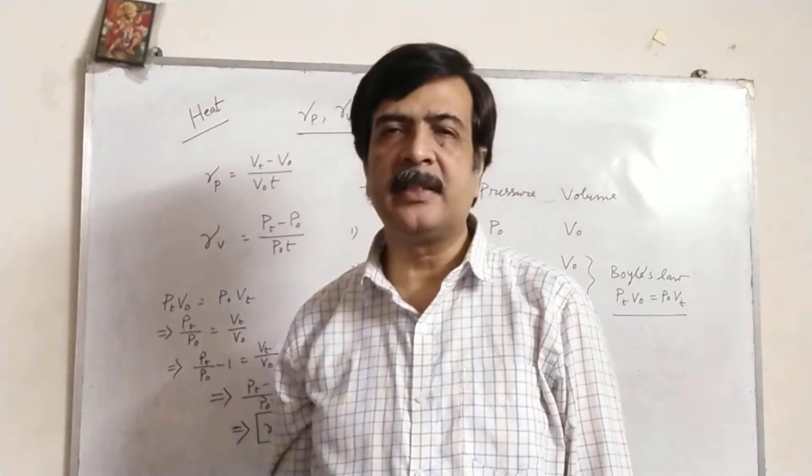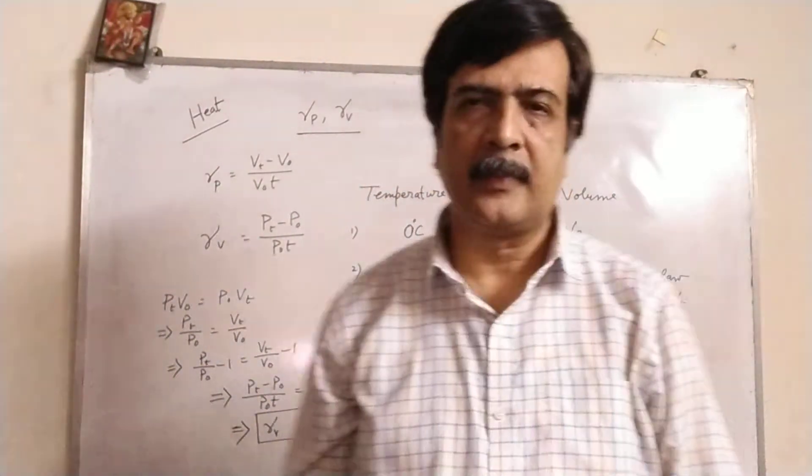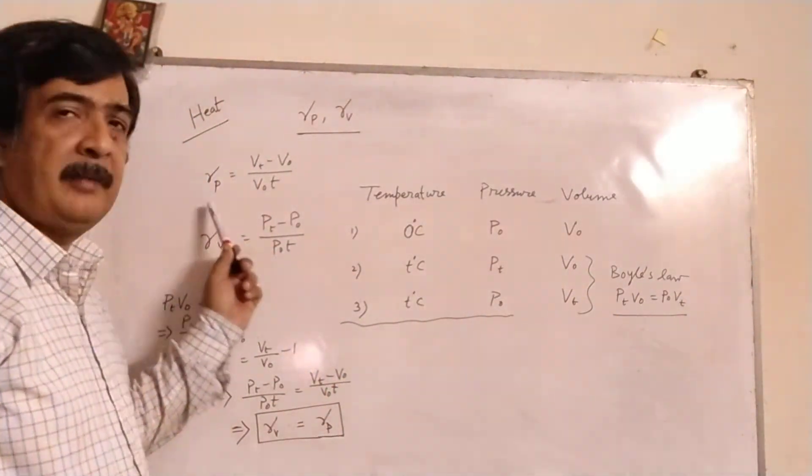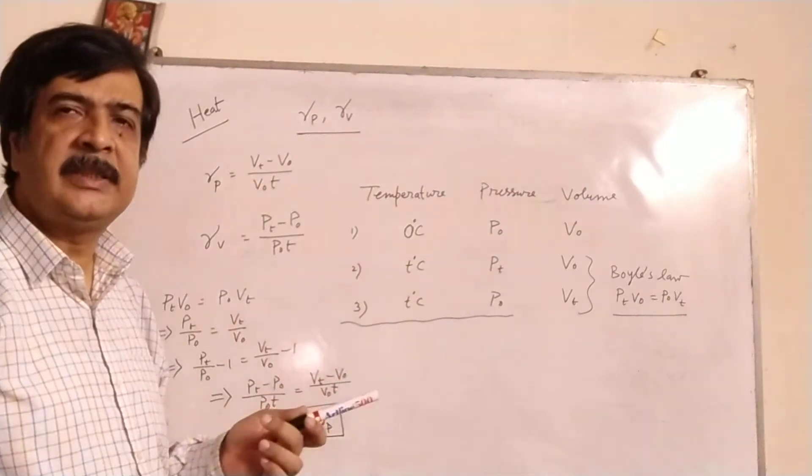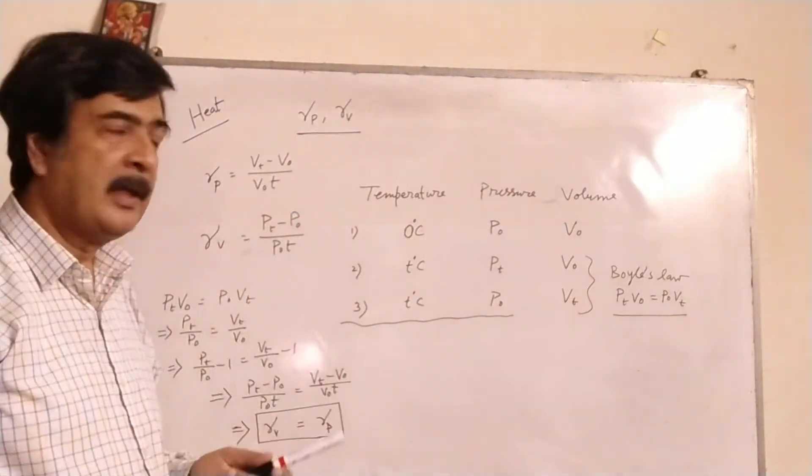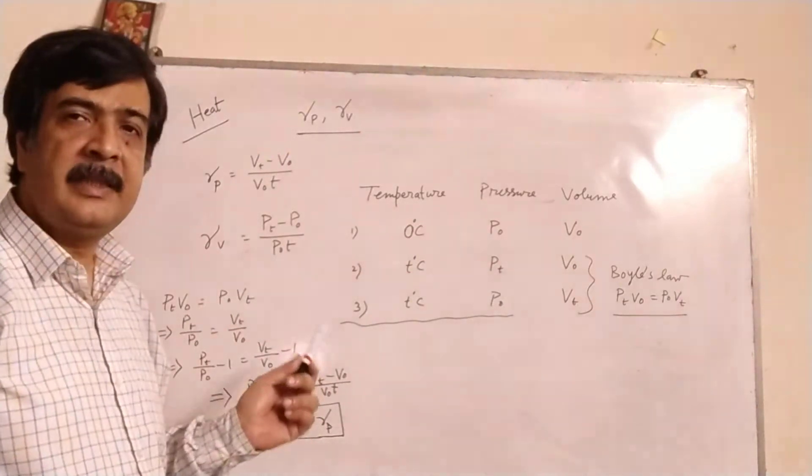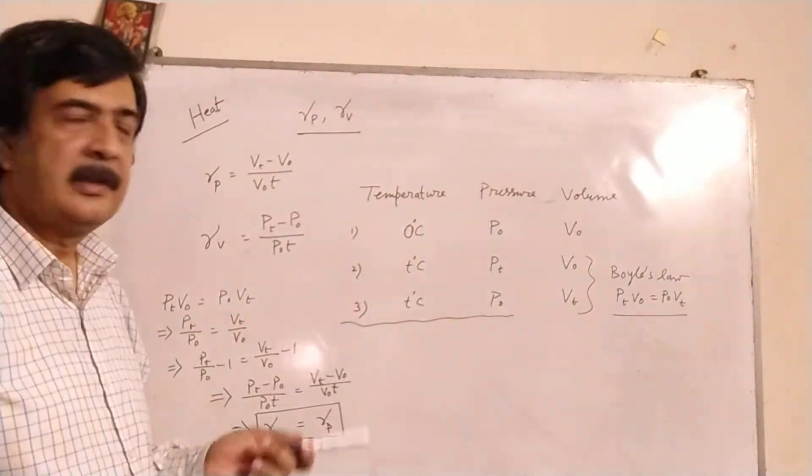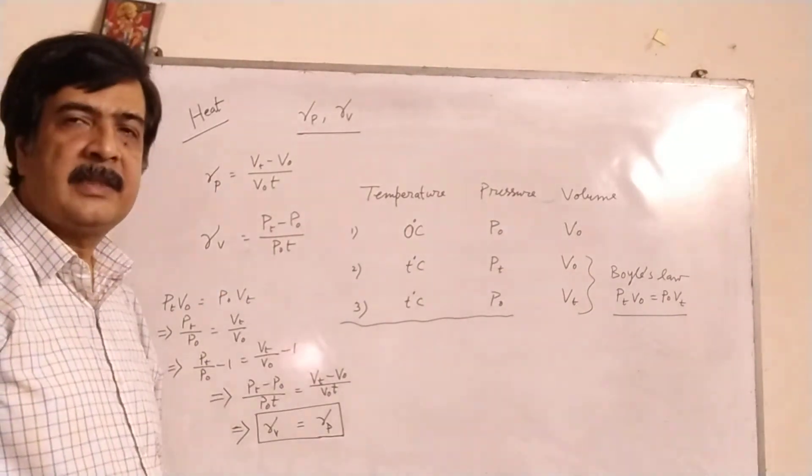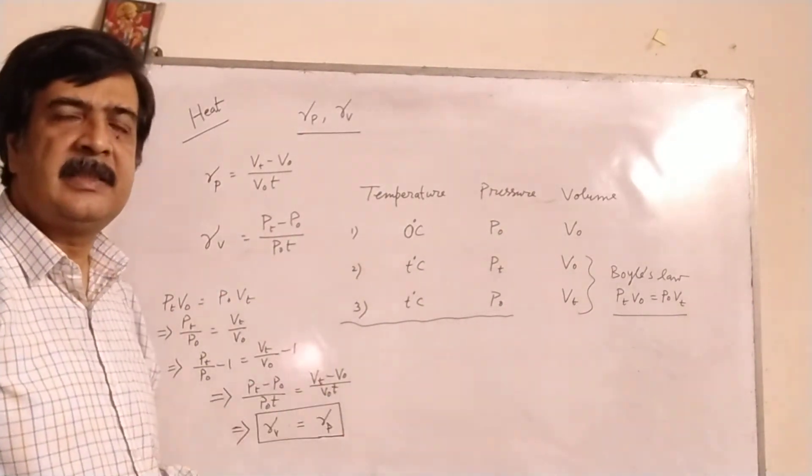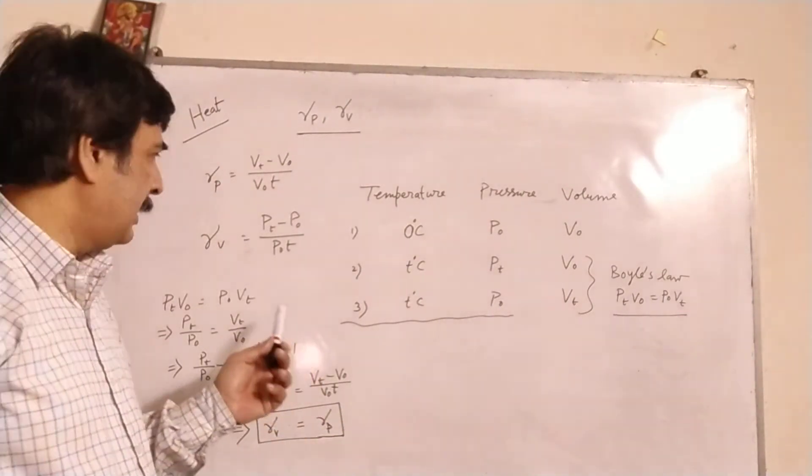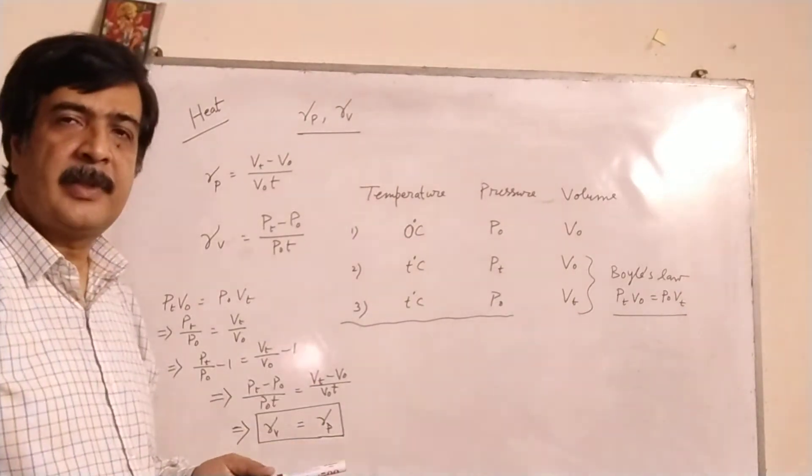We will try to understand gamma_p and gamma_v and establish a relation between them. Gamma_p, when p is constant and volume is changing with temperature, is (V_t - V_0)/(V_0 × t). Gamma_v, when V is constant and pressure is changed, is (P_t - P_0)/(P_0 × t). P_t means the pressure at t degrees Celsius, P_0 is the pressure at zero degrees Celsius, and t is the change in temperature. V_t and V_0 accordingly.